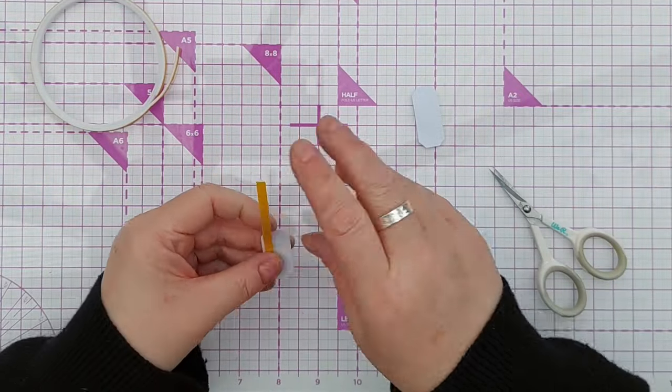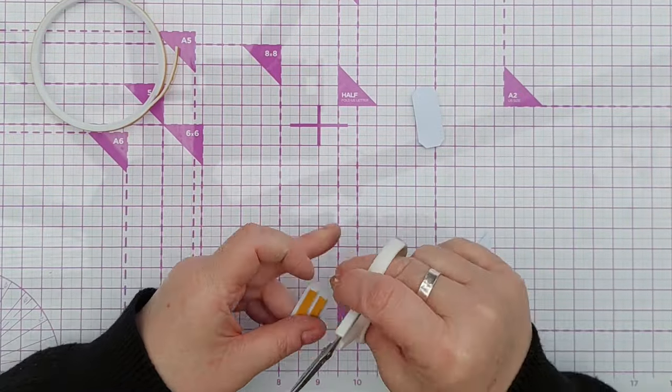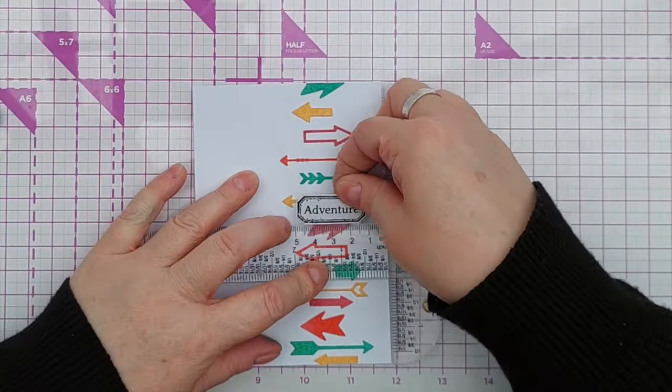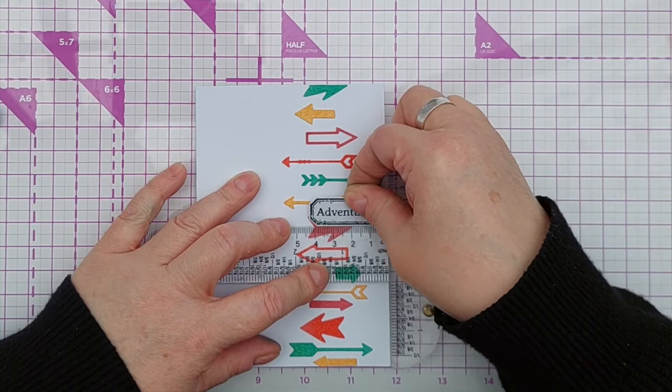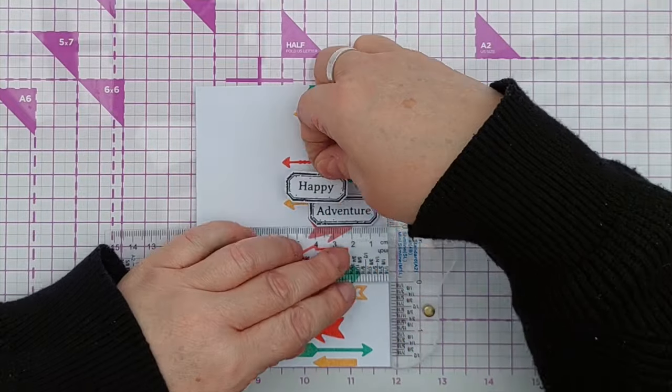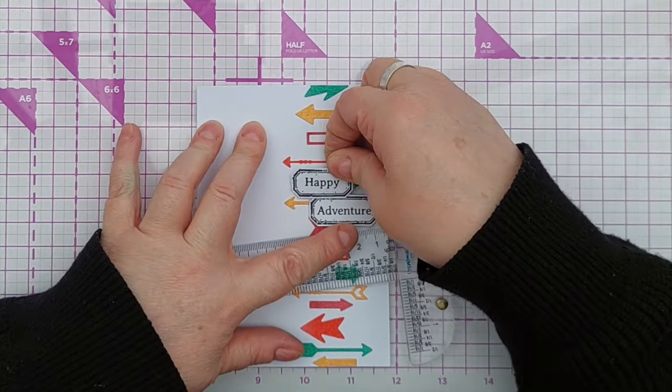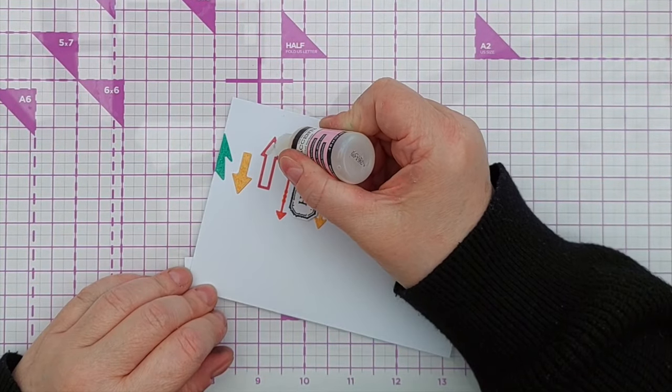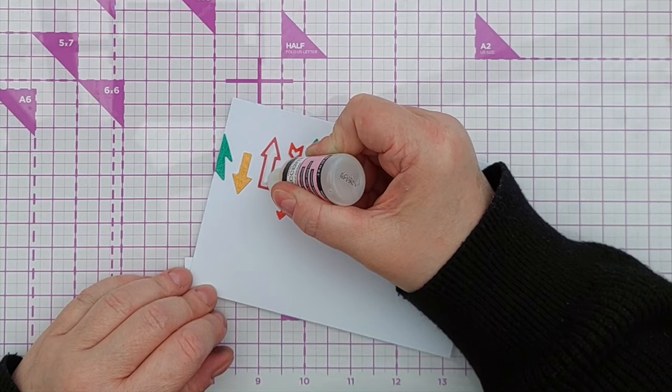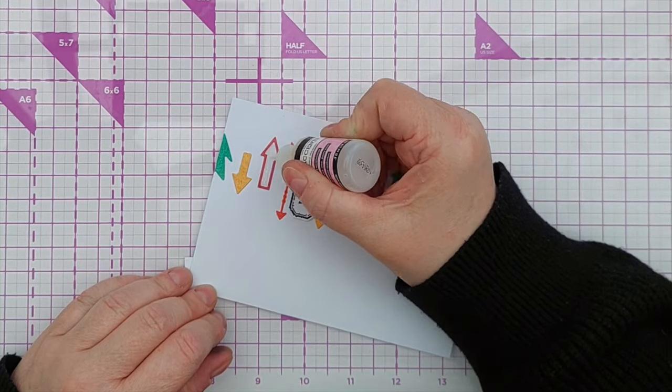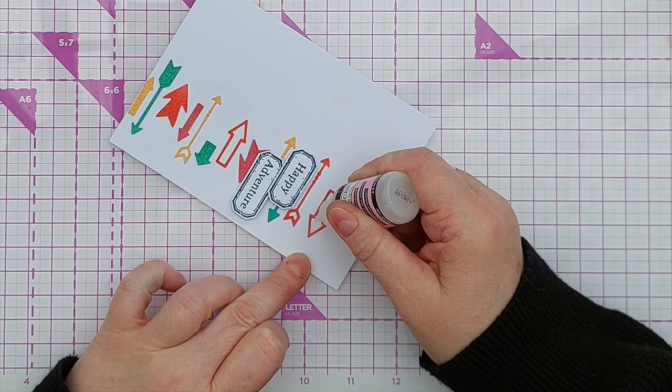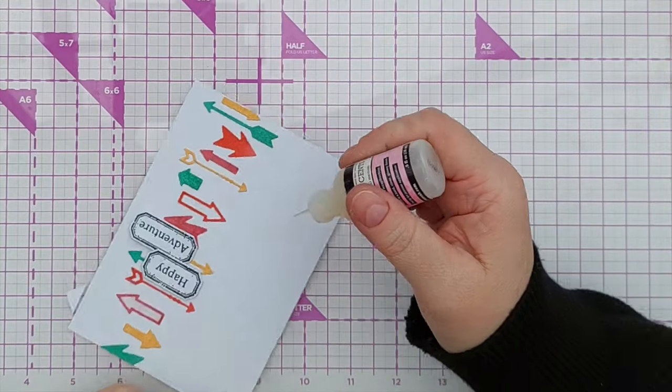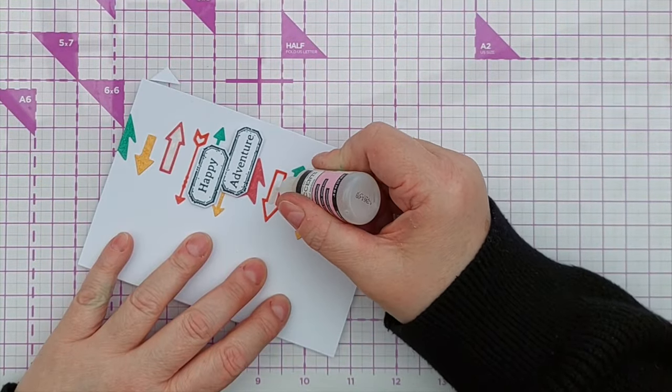To add some dimension I did pop these sentiment pieces up on foam tape and again use my T-square ruler to make sure I got them straight and then I brought in my little bottle of glossy accents and I added glossy accents to the two arrows that were open, the ones that didn't have anything in the middle. Although on video it looks like the glossy accents are a bit yellow they will dry clear.